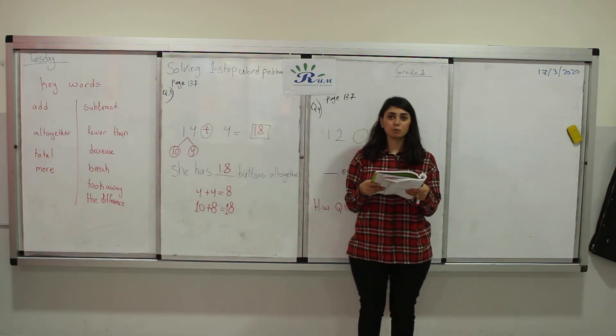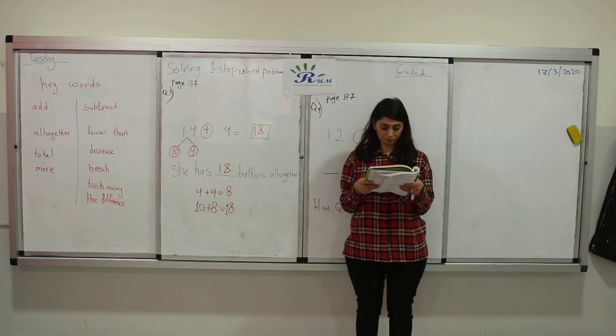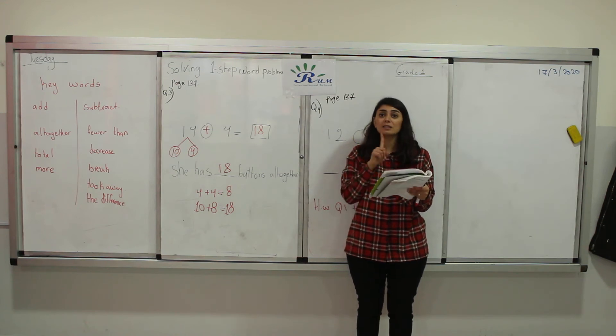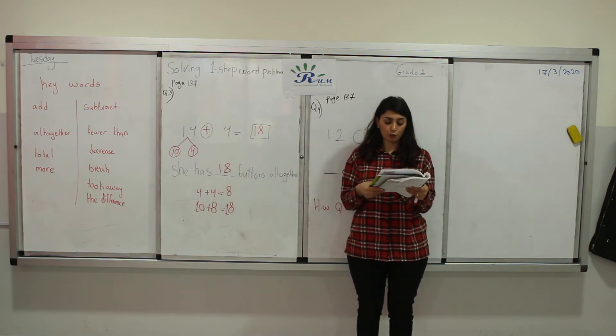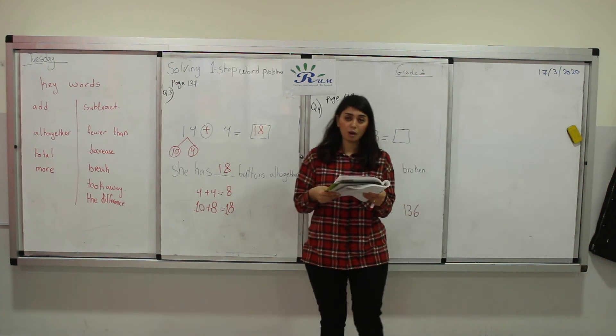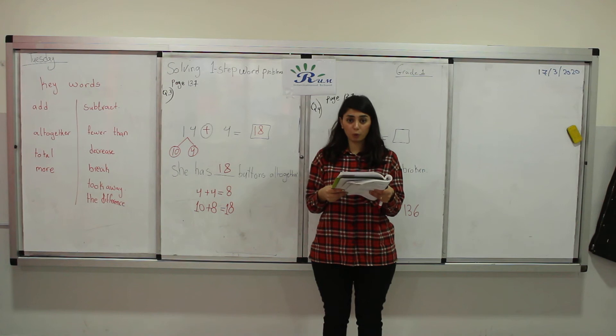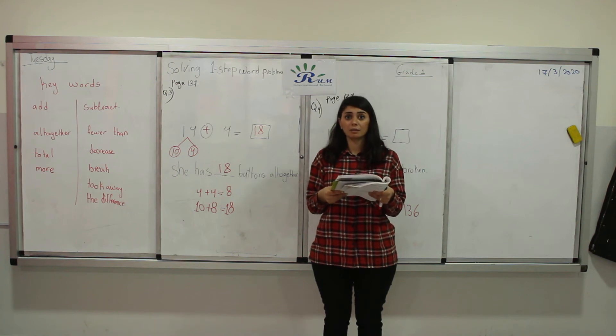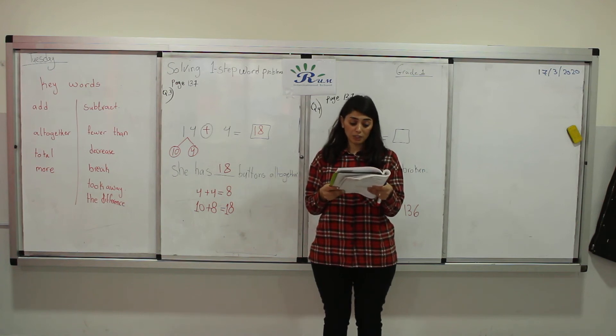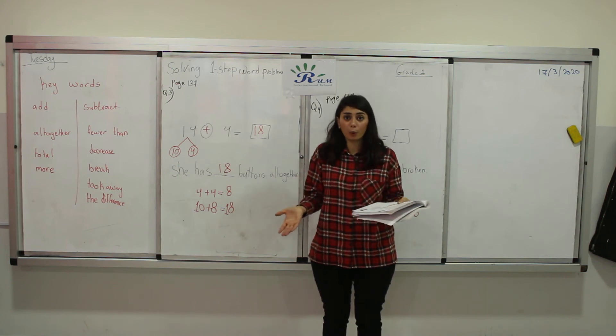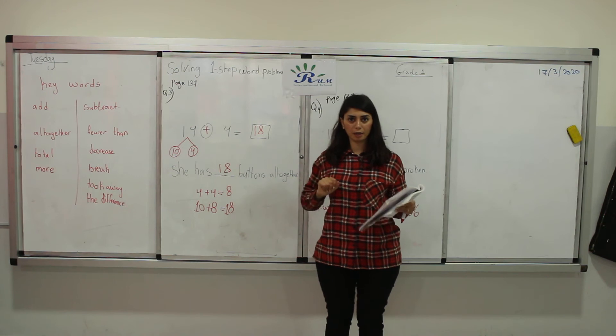Here we have 12 eggs. Mother buys 12 eggs from the market. She breaks 3 eggs on her way home. How many eggs are not broken? Mother, on her way of going home, she broke 3 eggs. And the question asking, how many eggs are not broken? We lost some eggs.